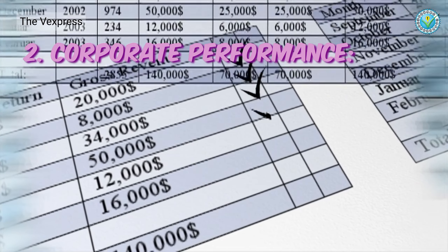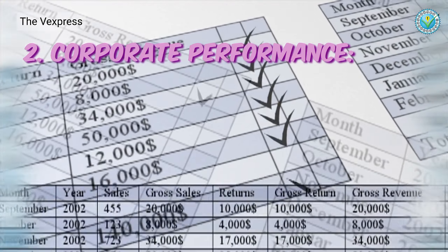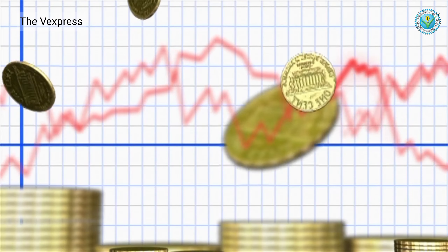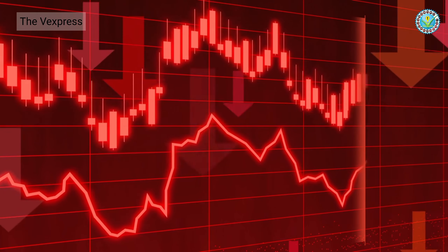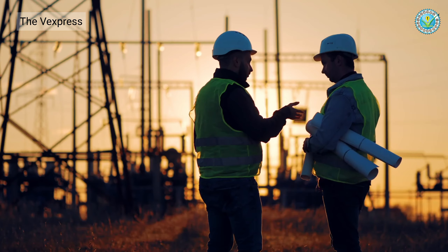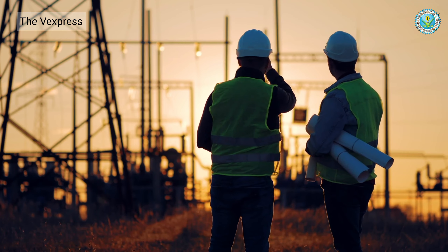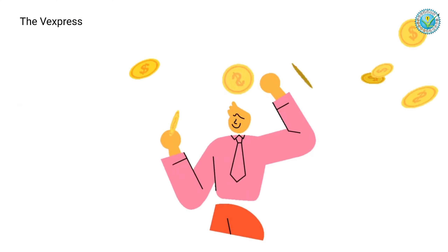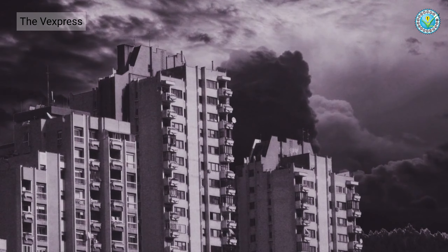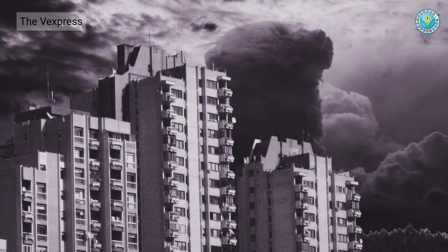Two, corporate performance: if companies report strong profits, their stock prices typically rise. On the other hand, poor financial results can lead to a decline in stock prices. Three, investor sentiment: positive news, such as technological advancements or successful product launches, can boost investor confidence, leading to a rise in stock prices. On the other hand, negative news, such as political instability or natural disasters, can cause fear among investors, leading to a market decline.